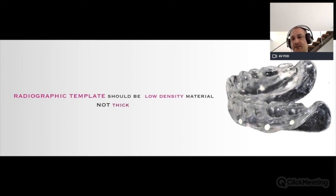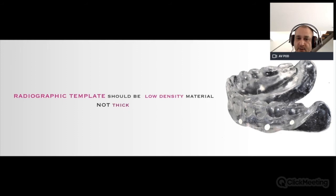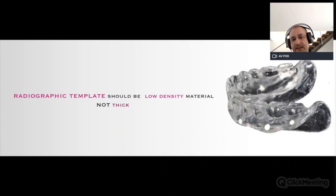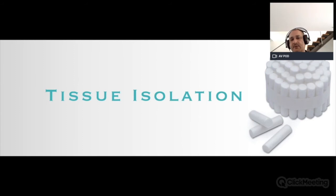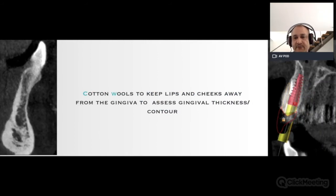The material used for radiographic templates should be very low density. Even with low density, the thickness should not exceed what is recommended — we want a medium to thin thickness material with very low density so as not to interfere with the x-ray beam. We also need to make some tissue isolation because of the lack of grey contrast in the CBCT, which is a significant problem.